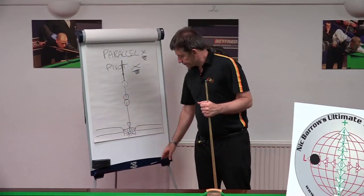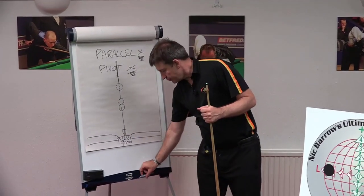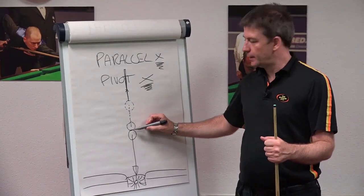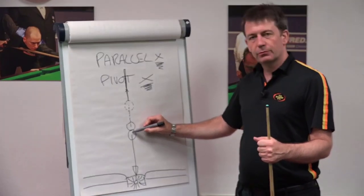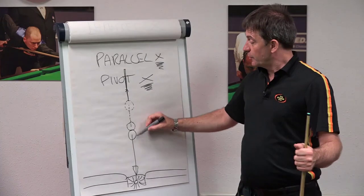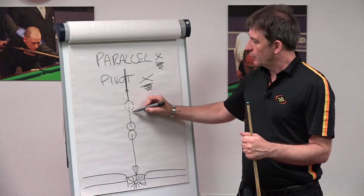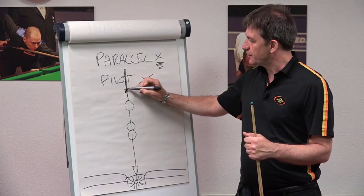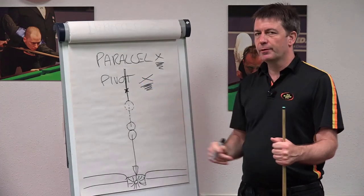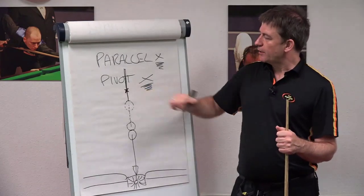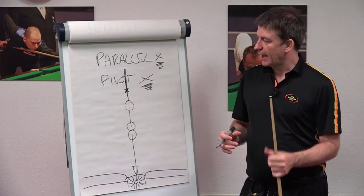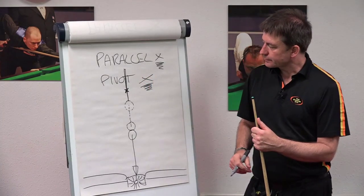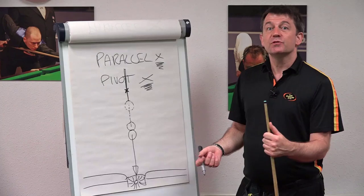Here we can see the pocket, the object ball, and the ghost ball — that's where you want your cue ball to be to pot the object ball. That's where your cue ball is, and that's the bridge hand — the pivot point, the fulcrum — where the cue is anchored onto the table, on the line of aim.